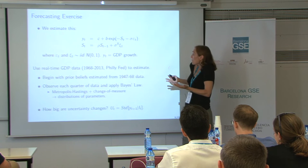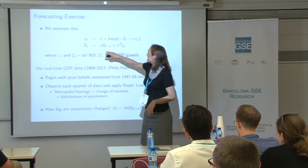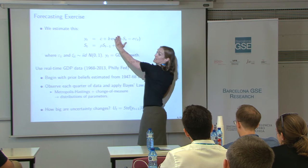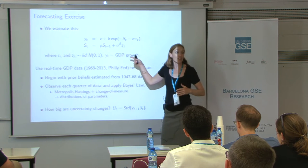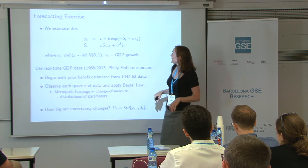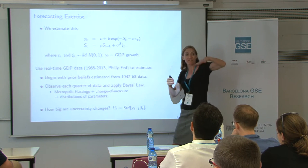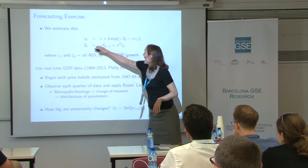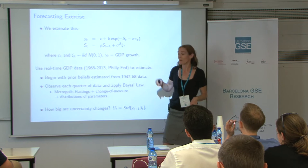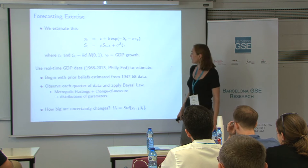This is GDP growth with a constant and a parameter governing the exponential twist. If I didn't have this exponential, this thing would be linear — essentially a Kalman filtering system. We've got one thing that makes it not quite normal, and that's what gives it some skewness. This is just an AR(1) process with a hidden state and the exponential twist around it. We use real-time GDP data from 1968 to 2013 from the Philly Fed, beginning with prior beliefs estimated on a training sample from 1947 to 1968.